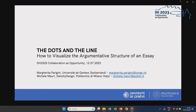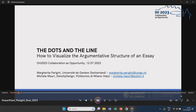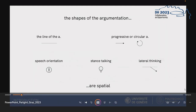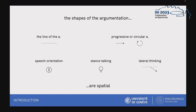Let's start from the language we use to talk about argumentation. Here we have some metaphors related to argumentation: the line, progressive or circular argumentation, speech orientation, stance talking, lateral thinking. All of these metaphors underline the spatial dimension of argumentation.